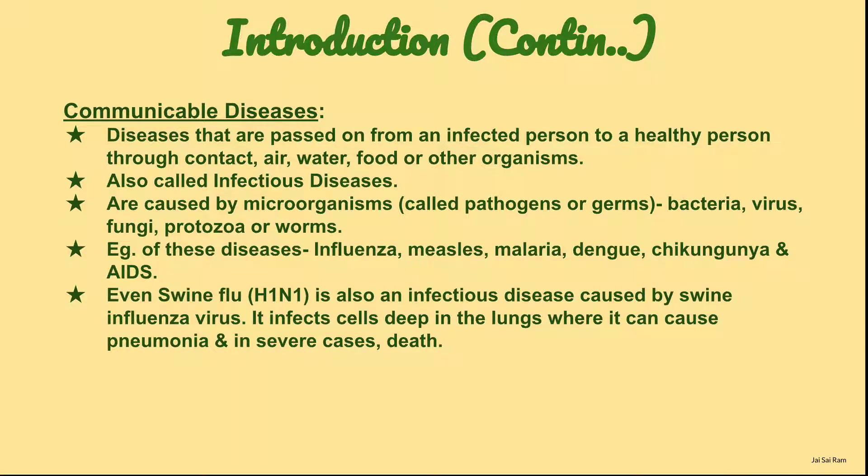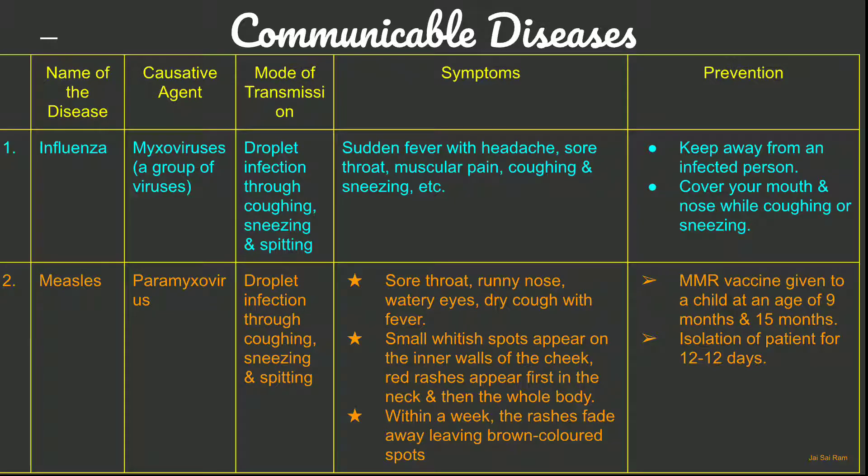Now we look at some communicable diseases — how they are caused, by which agent, how they are transmitted, their symptoms, and preventive measures. First, influenza: it is caused by myxoviruses, a group of viruses, making it a viral disease. The mode of transmission is droplet infection through coughing, sneezing and spitting.